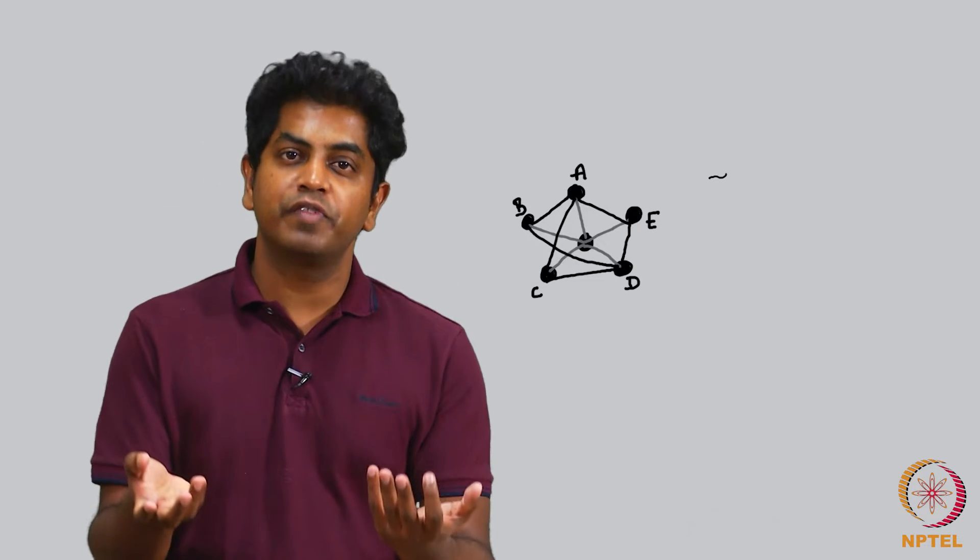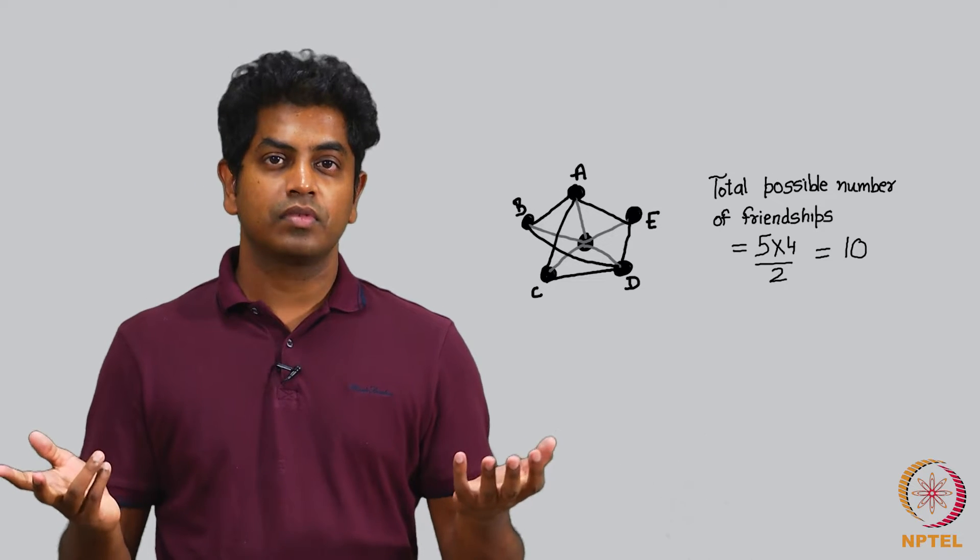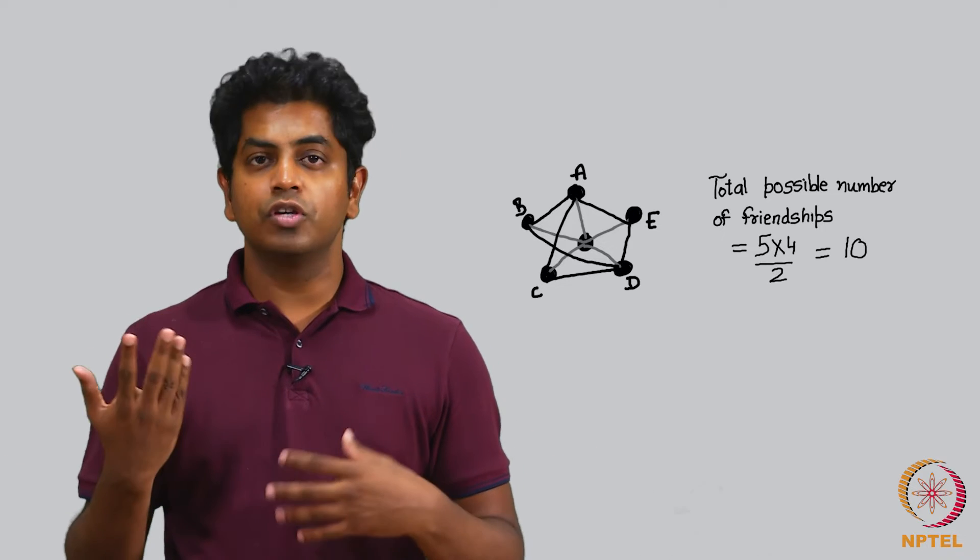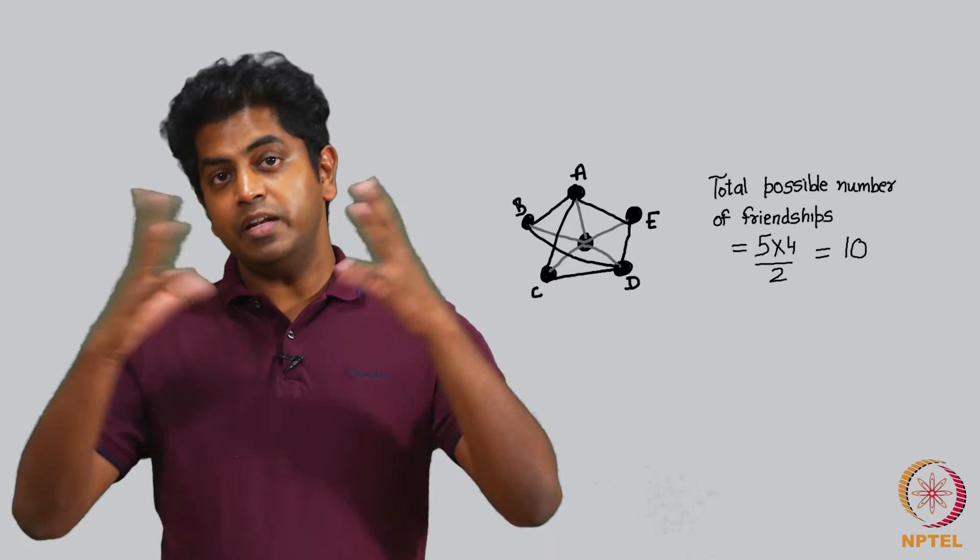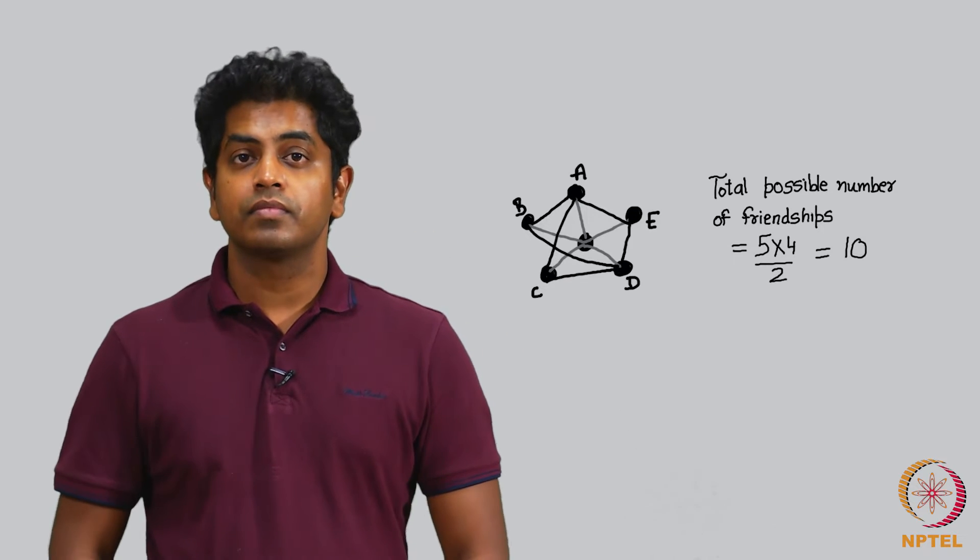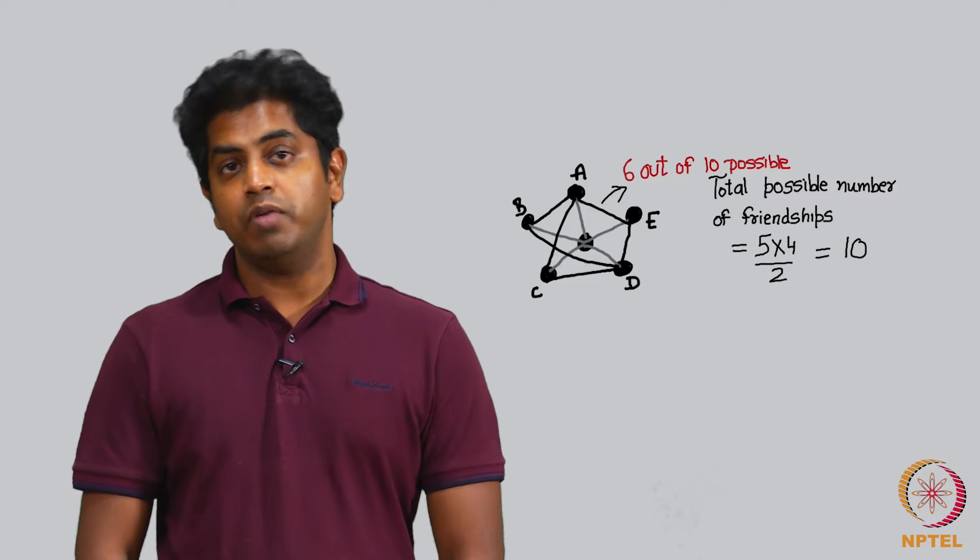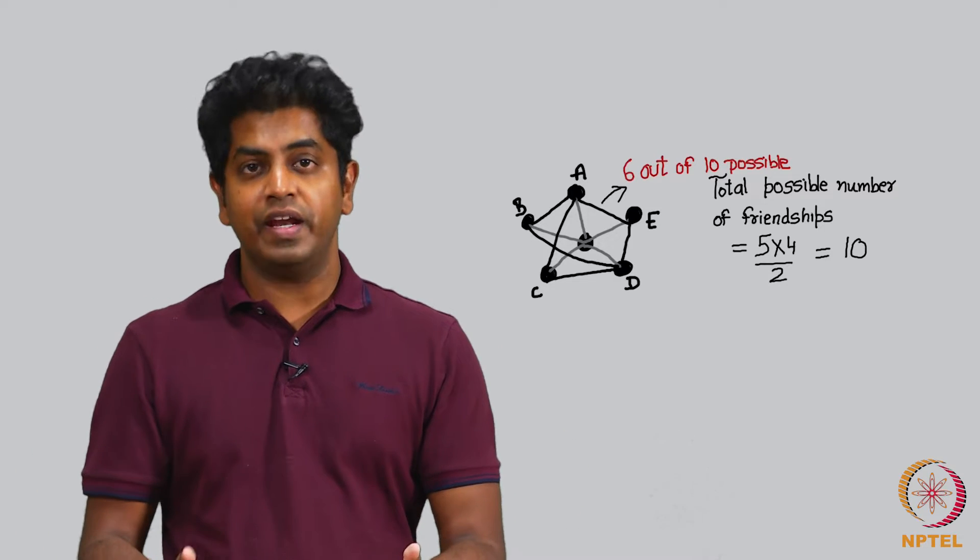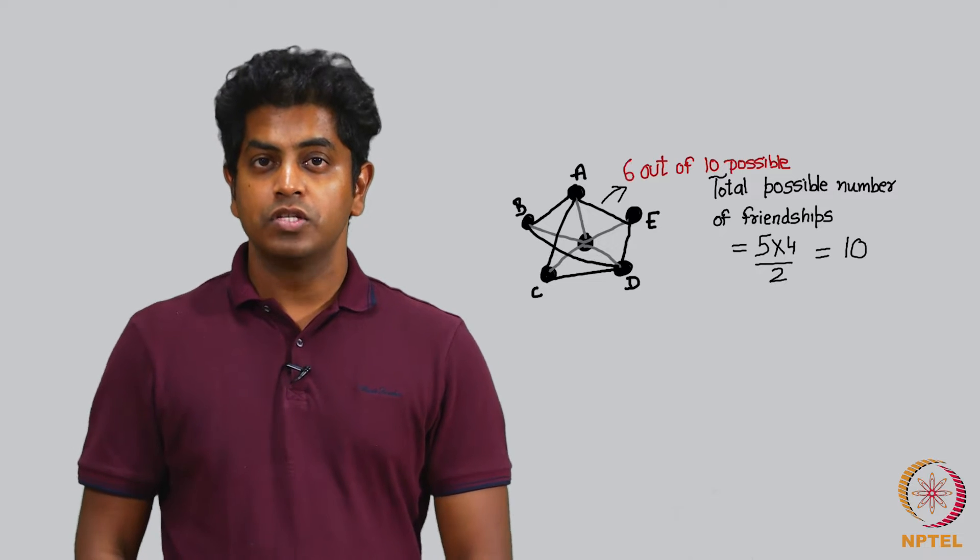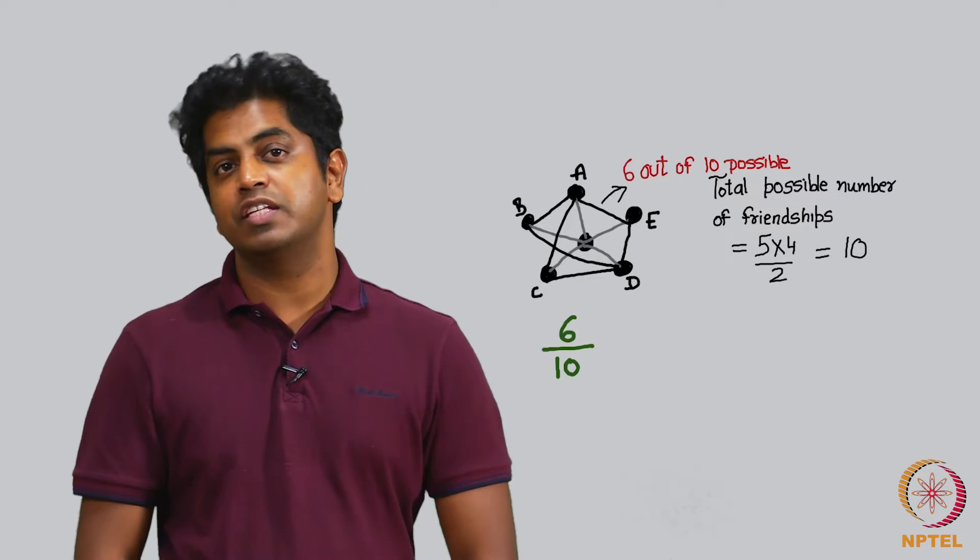How many possible friendships can happen between five people? 5 into 4 by 2 - you see that, that is very simple. 5 into 4 by 2 gives you 10. There are 10 possible friendships. How many friendships are there in this example? There are six friendships. So I would say the strength of my friends depends on the friendships between them. So this fraction 6 by 10 denotes the strength of my friendship with these five people.